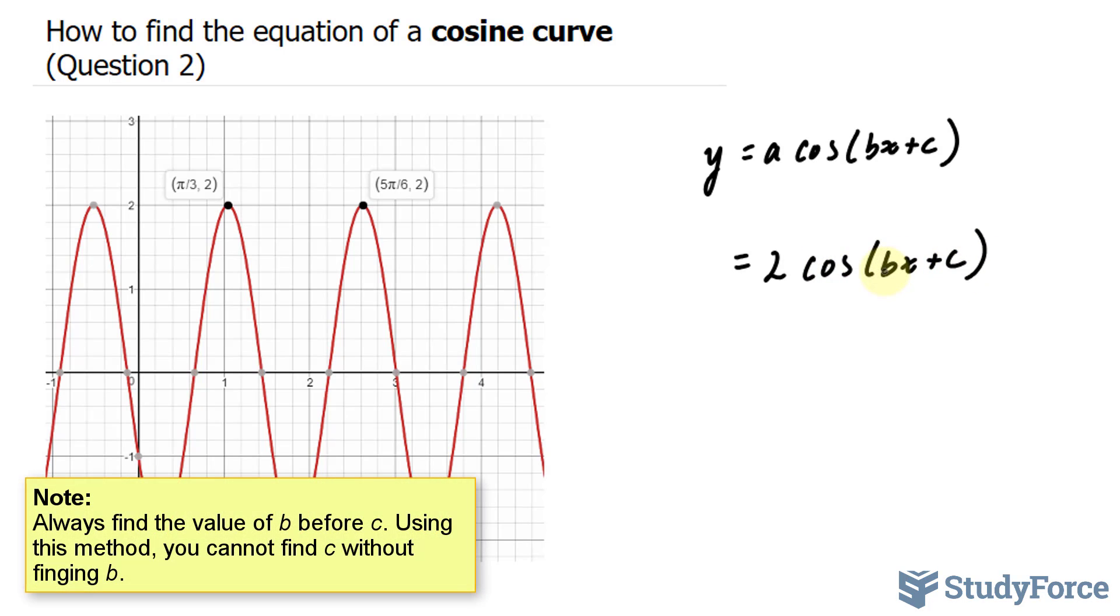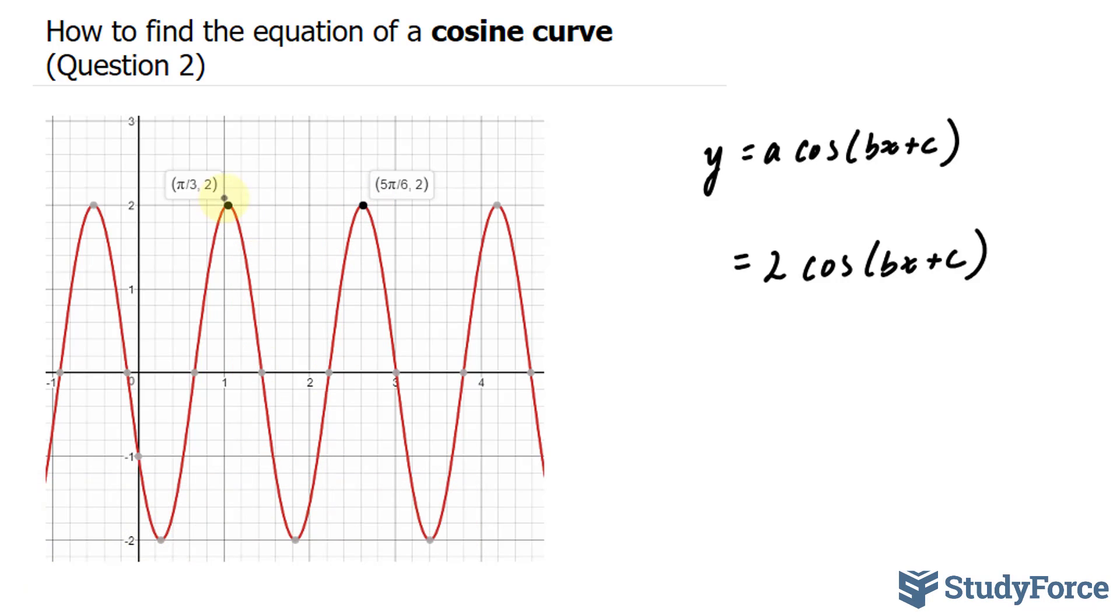To find this b value, which represents the cycle, you have to take a look at the period of one cycle. So here's one completed cycle, this peak to this peak. The distance from here to here can be found by subtracting this x-coordinate with this x-coordinate. What that will provide is the period. And with the period, you can find your cycle, which will represent b.